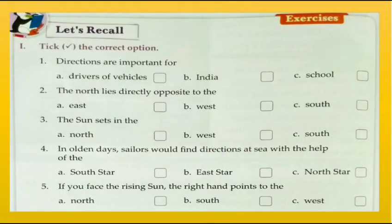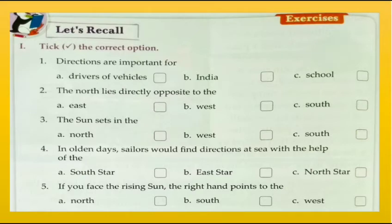Now let's have the textbook exercise. Question one: directions are important for drivers of vehicles. Question two: the north lies directly opposite to the south. Question three: the sun sets in the west. Question four: in olden days, sailors would find direction at sea with the help of the north star. Question five: if you face the rising sun, the right hand points to the south.